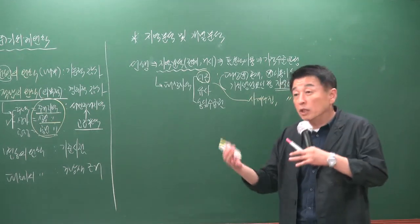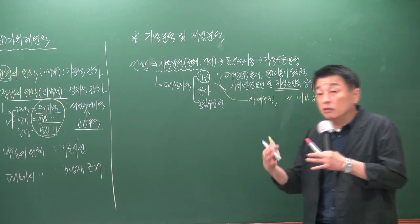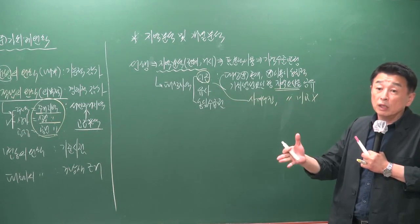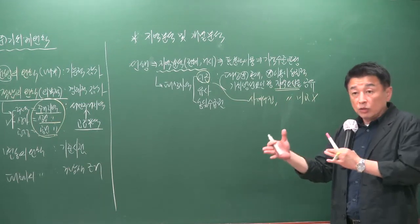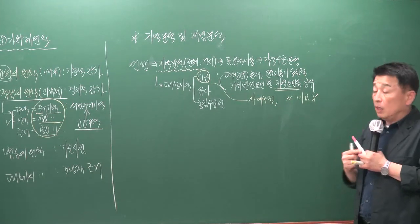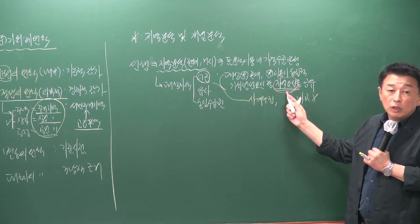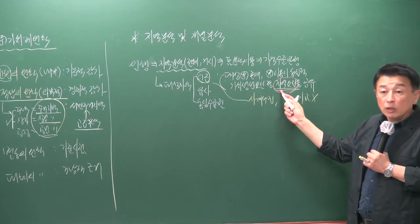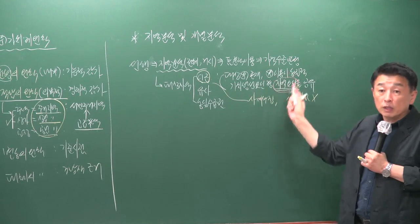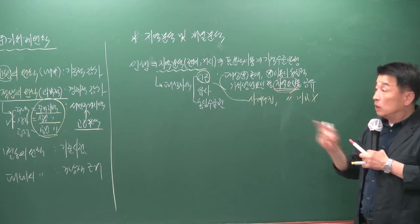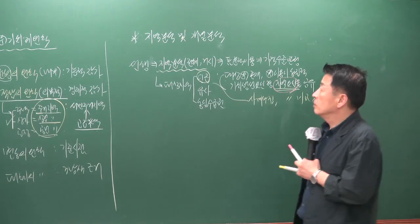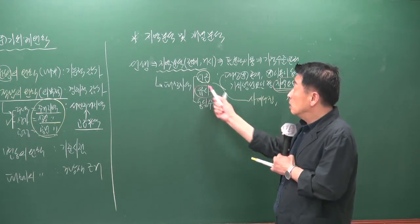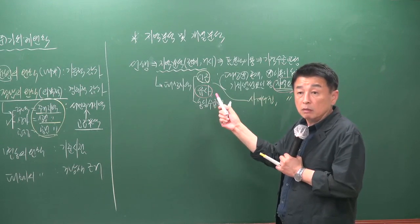거래사례비교법에서 문제를 출제할 때는 항상 '이 사례는 인근 지역에 소재하는 사례'라고 제시합니다. 인근 지역 내 사례를 사용하면 지역 요인 비교가 필요 없습니다. 작년 시험에서는 지역 요인인데 개별 요인을 공유한다고 하여 틀리게 출제되었습니다. 감정평가 규칙상의 용어를 기반으로 출제자들이 지문을 작성하므로, 인근 지역과 유사 지역의 차이를 명확히 구별해야 합니다.